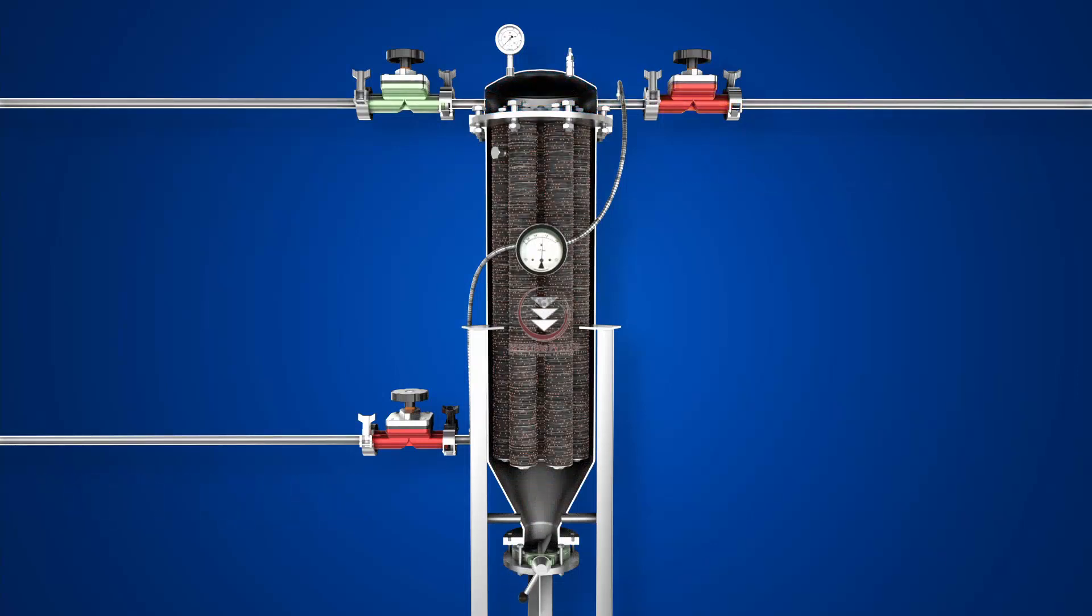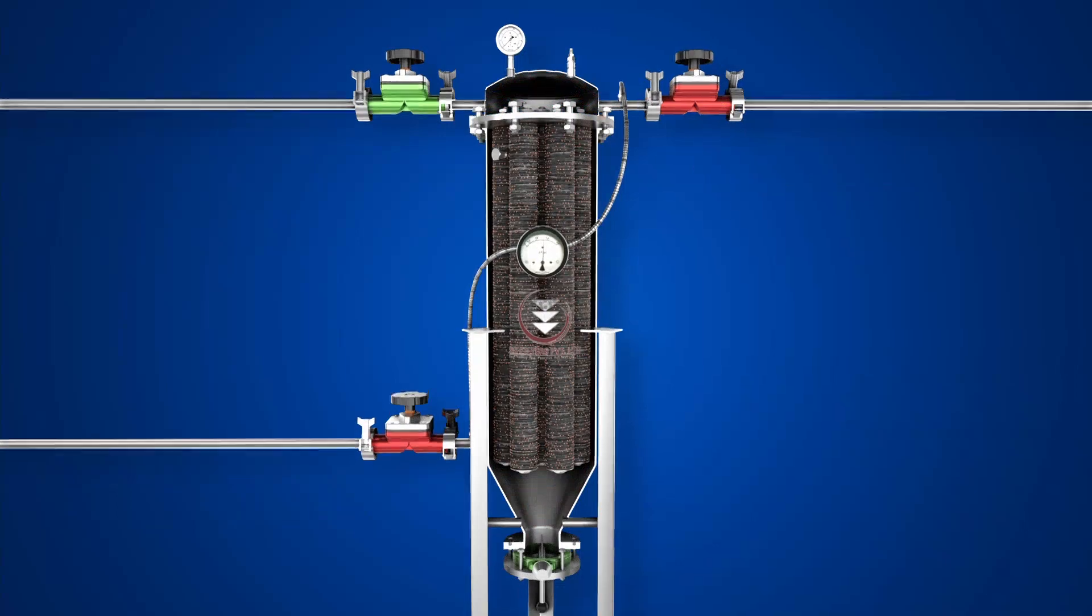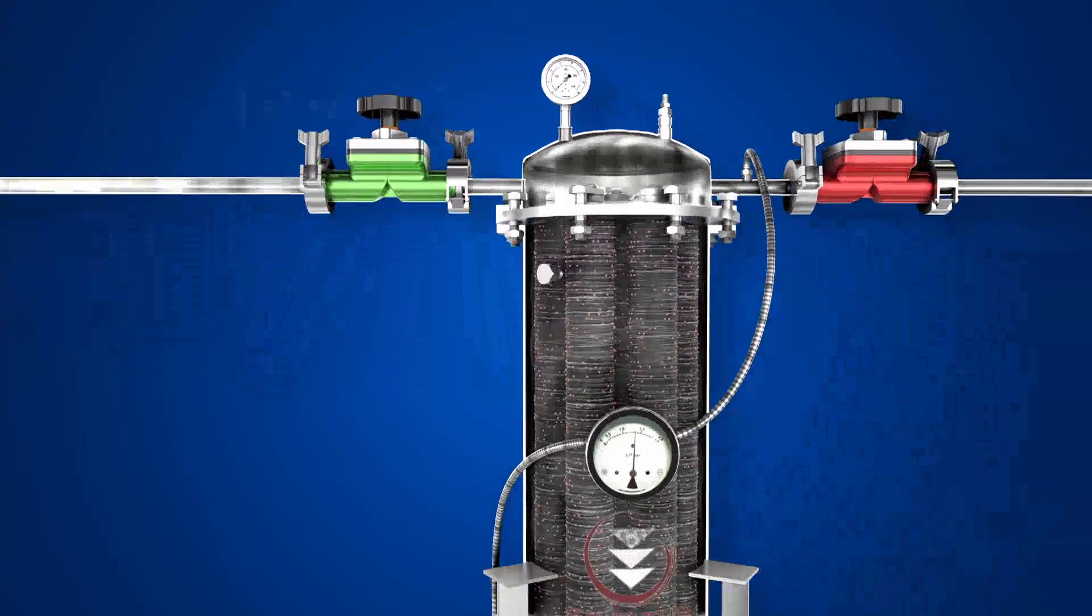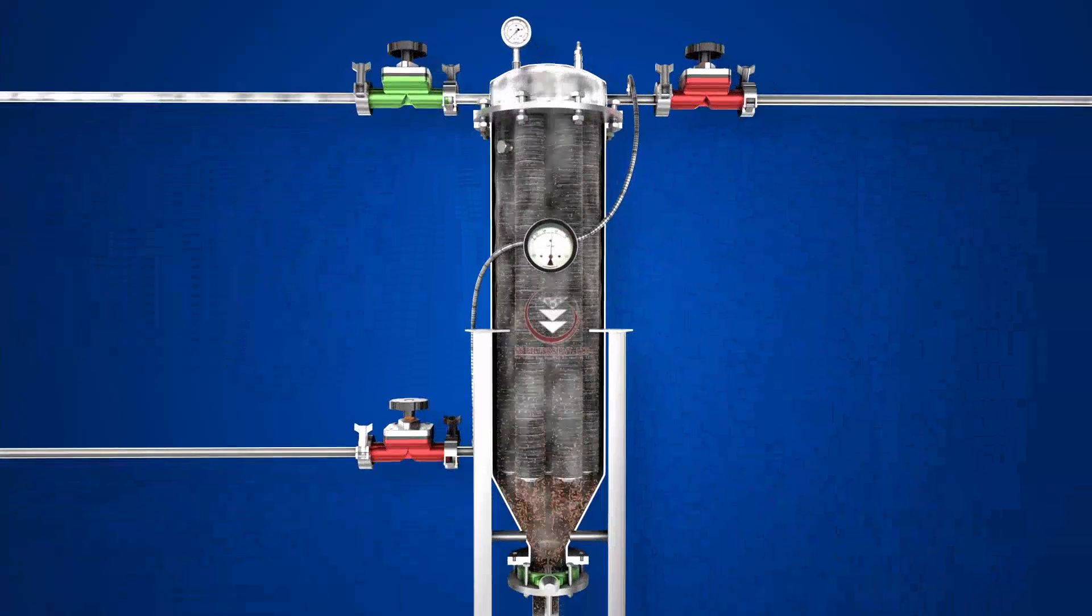Now the backwashing process starts by opening the drain valve and then the compressed air is passed through the backwash valve located at the top. As a result, the waste-wet cake is collected at the bottom chamber.